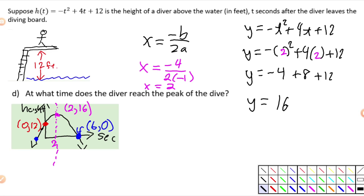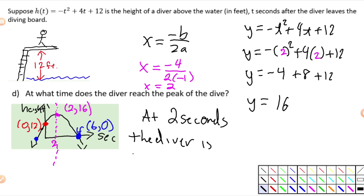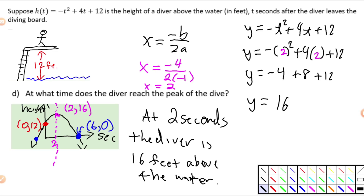Let's review what we know so far. We knew the height of the diving board was 12 feet. We solved and found that the diver will hit the water in six seconds. We also know the maximum height of the diver is going to be at two seconds and will be 16 feet — that's the highest point. We're really starting to take this problem all the way apart.